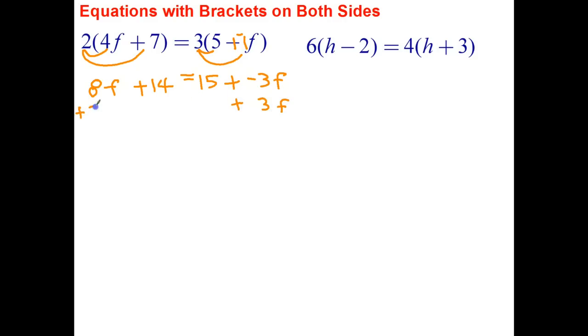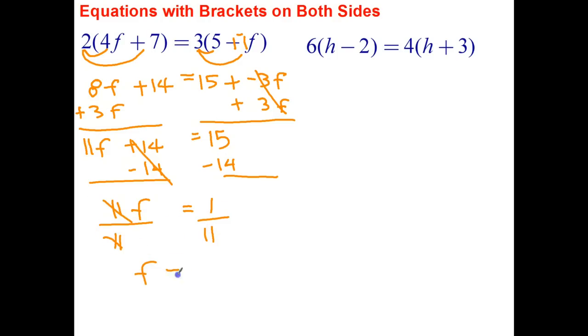Whenever you've got the situation where you've got a positive coefficient, such as 8f, and the negative coefficient, such as negative 3f, usually the best way to go is to just add the opposite of negative 3f, which is positive 3f, because that is going to avoid negative coefficients. Negative 3f plus positive 3f goes to 0, or sometimes we say they cancel each other out. 8f plus 3f is 11f plus 14. We now have a two-step equation to solve. We take 14 from both sides. That leaves us with 11f on the left. 15 minus 14 is 1. Divide both sides by 11, and the answer is f equals 1/11.